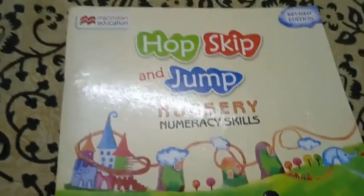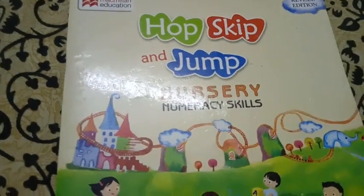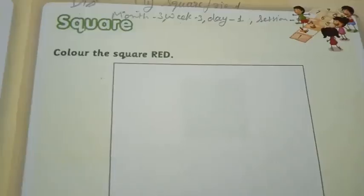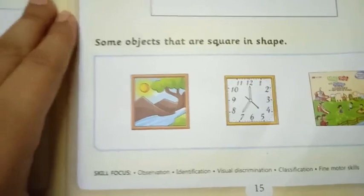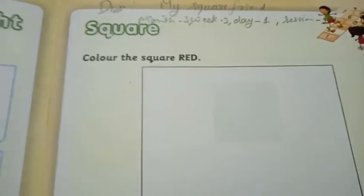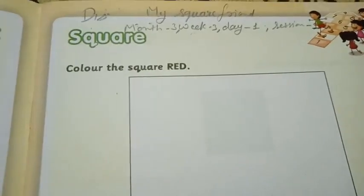This is your course book children. Hope, Escape and Jump Nursery Numeracy Skills. So children open page number 15 and chapter number 9. And the name of the chapter is Square. What is this children? Square.